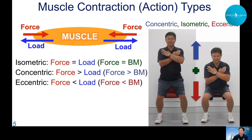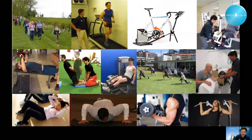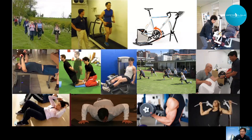In this lecture, eccentric exercise is defined as exercise mainly consisting of eccentric muscle contractions. Typical eccentric exercises include going down a slope, Nordic hamstring exercise, sit-ups where you are lowering the body down to the floor, push-ups going down to the floor, and lowering a dumbbell.